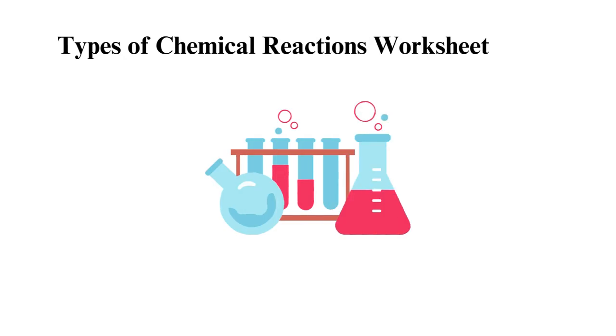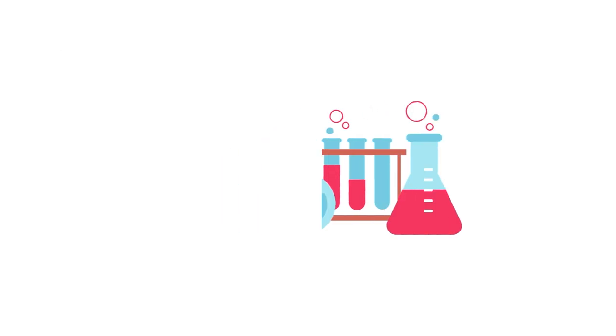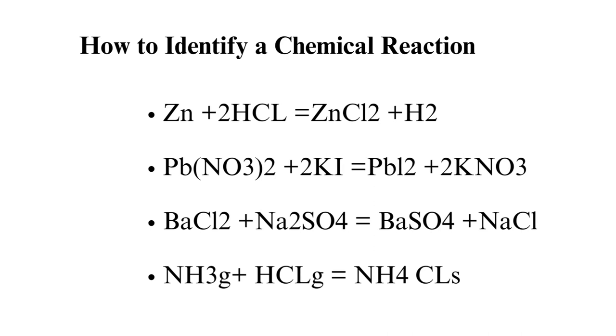Types of Chemical Reactions Worksheet. How to identify a chemical reaction. Chemical reactions always occur everywhere around us. For instance, if you check outside, you will notice rusted iron sheets or metals. Therefore, it's best to understand how to identify a chemical reaction.